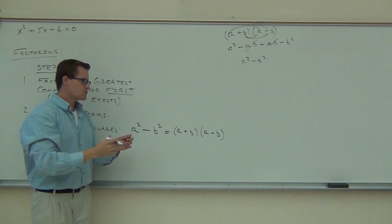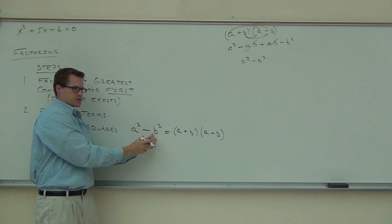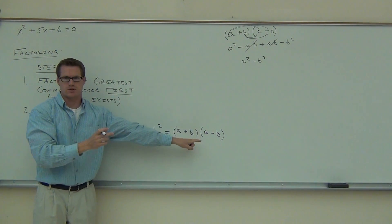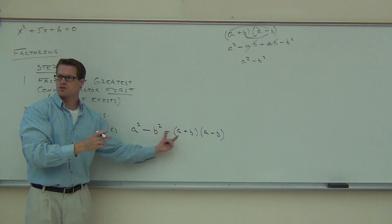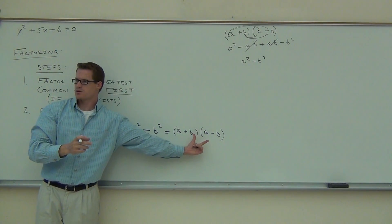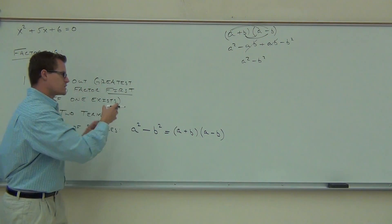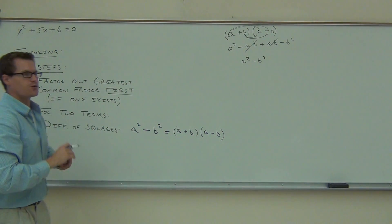As long as you can see something squared minus something squared, you can factor it. That's good news for us because it gets rid of the squares — they're gone. Difference of squares works very well for us.